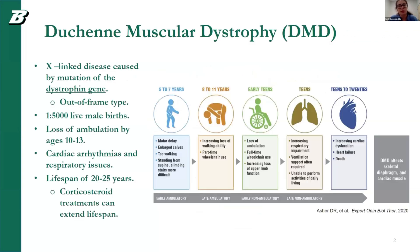As an overview, Duchenne muscular dystrophy, or DMD, is an X-linked disease caused by a mutation of the dystrophin gene. This is an out-of-frame mutation that results in no dystrophin protein being produced. It has an occurrence of 1 out of 5,000 live male births and results in loss of ambulation by ages 10 to 13. In later teens to 20s, different medical issues can arise, such as cardiac arrhythmias and respiratory issues. Untreated, DMD has an estimated lifespan of only 20 to 25 years.